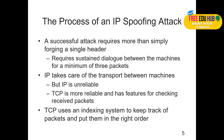TCP is more reliable and has features for checking and receiving packets. TCP has an indexing system to keep track of packets and put them in the right order — packet 1, then 2, then 3, then 4. Once communicated to the receiver, they must arrive in the same sequence. If they arrive in the correct sequence with no modification to the header, the data is compiled and information is conveyed. If the order is reversed or there is a change in the header or sequence, the packet is discarded and must be resent.